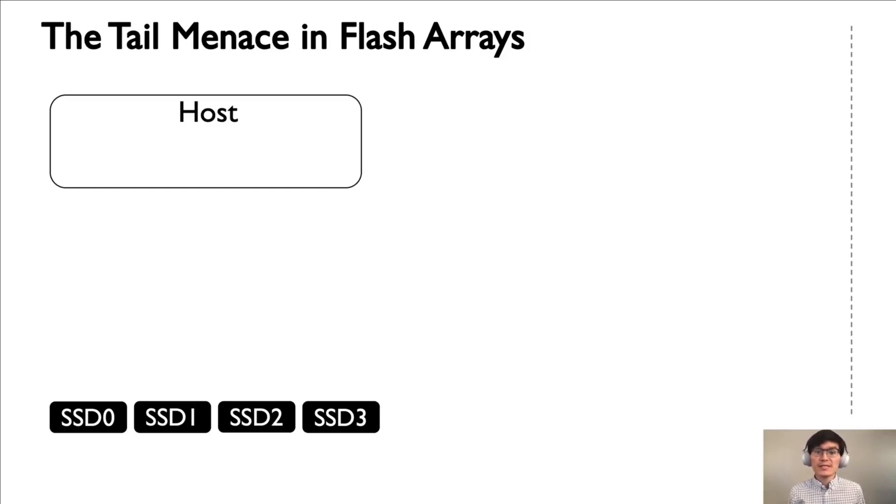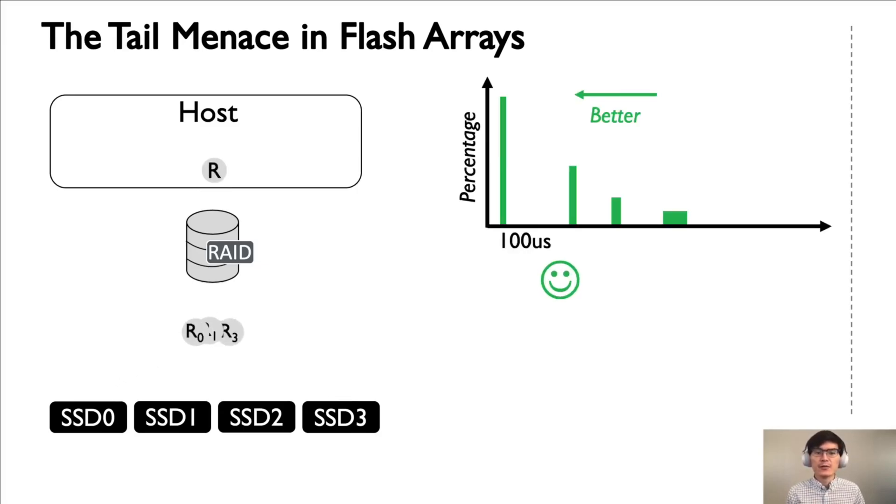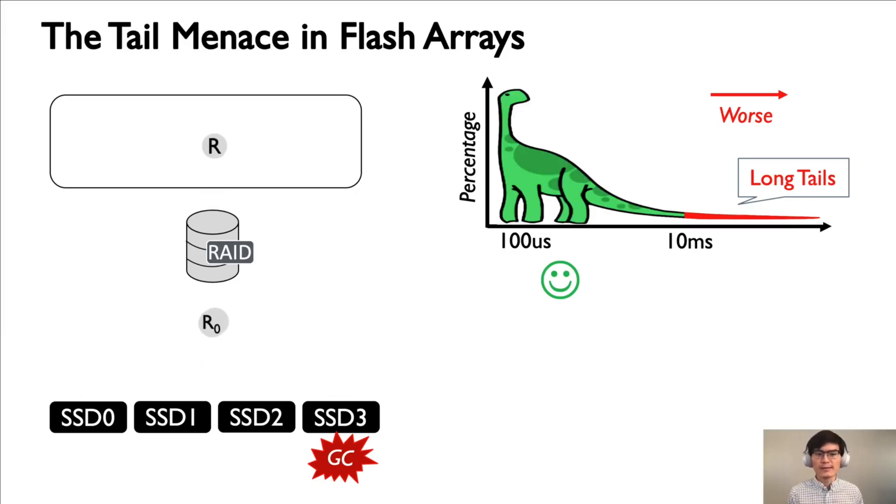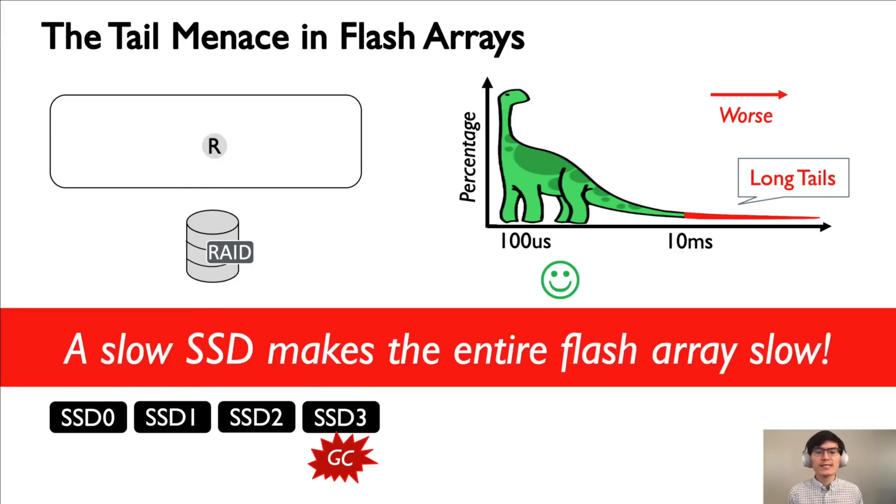The tail latency problem is much worse in flash arrays. If we organize four SSDs into a RAID5 and run a full-stripe read workload on top, each user request will be divided into three sub-IOs targeting different SSDs in the RAID. For most of the time, no GC is happening and you will get very good latencies. However, if one SSD is busy with GC, the entire user request will suffer as it needs to wait for all the sub-IOs to complete. As a result, a small percentage of user reads will experience extremely long latencies. The core problem here is that even one slow SSD will make the entire flash array slow.